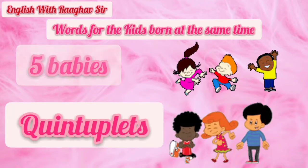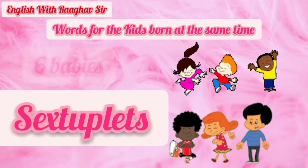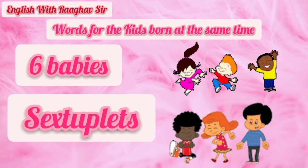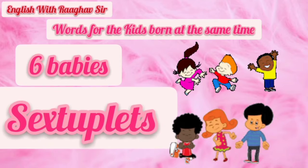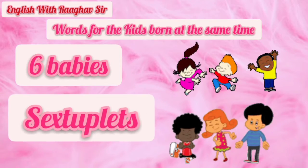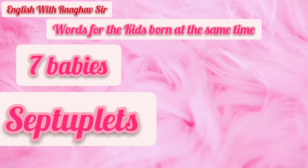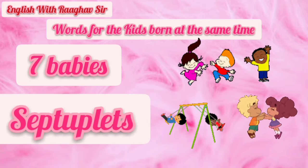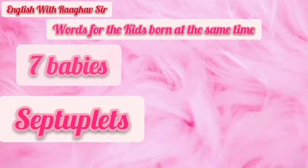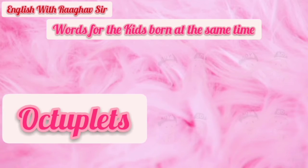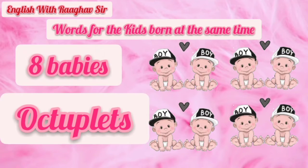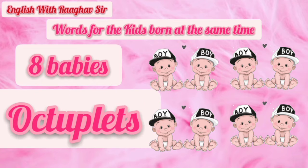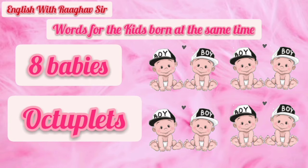If six kids are born, we call them sextuplets. If seven kids are born, it is called septuplets. If you have eight children, then you say octuplets — it is called octuplets.